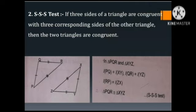If three sides of a triangle are congruent with three corresponding sides of the other triangle, then the two triangles are congruent. Look at the figure. In triangle PQR and triangle XYZ: length of PQ equals length of XY, length of QR equals length of YZ, and length of RP equals length of ZX. Therefore, triangle PQR is congruent to triangle XYZ. It is the SSS test.